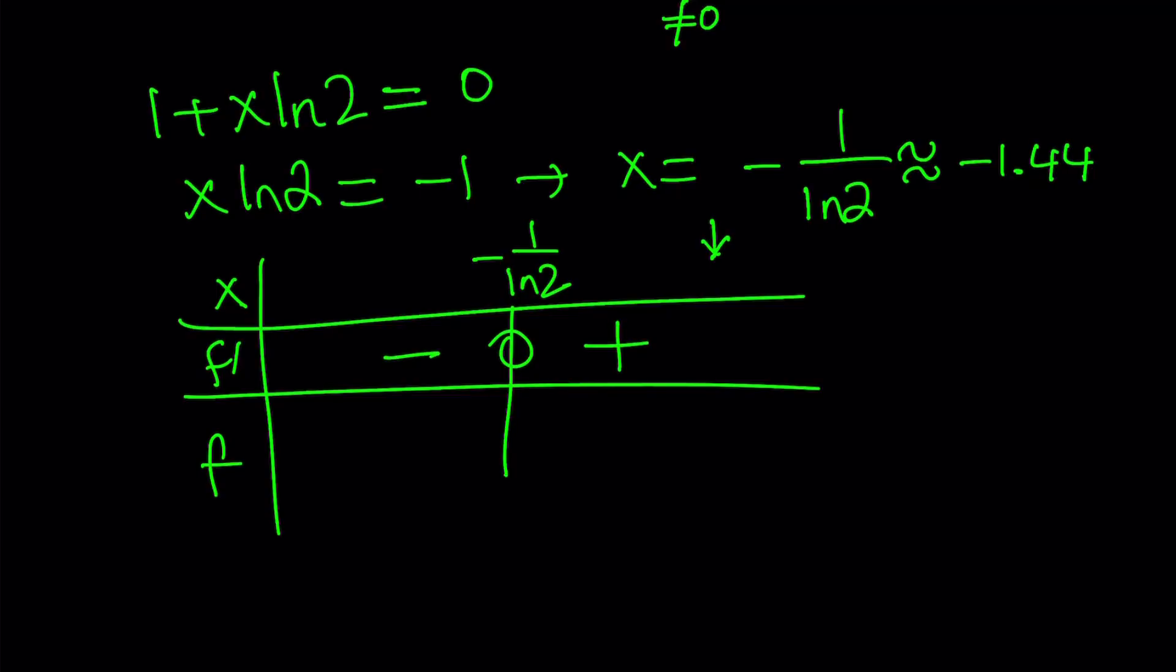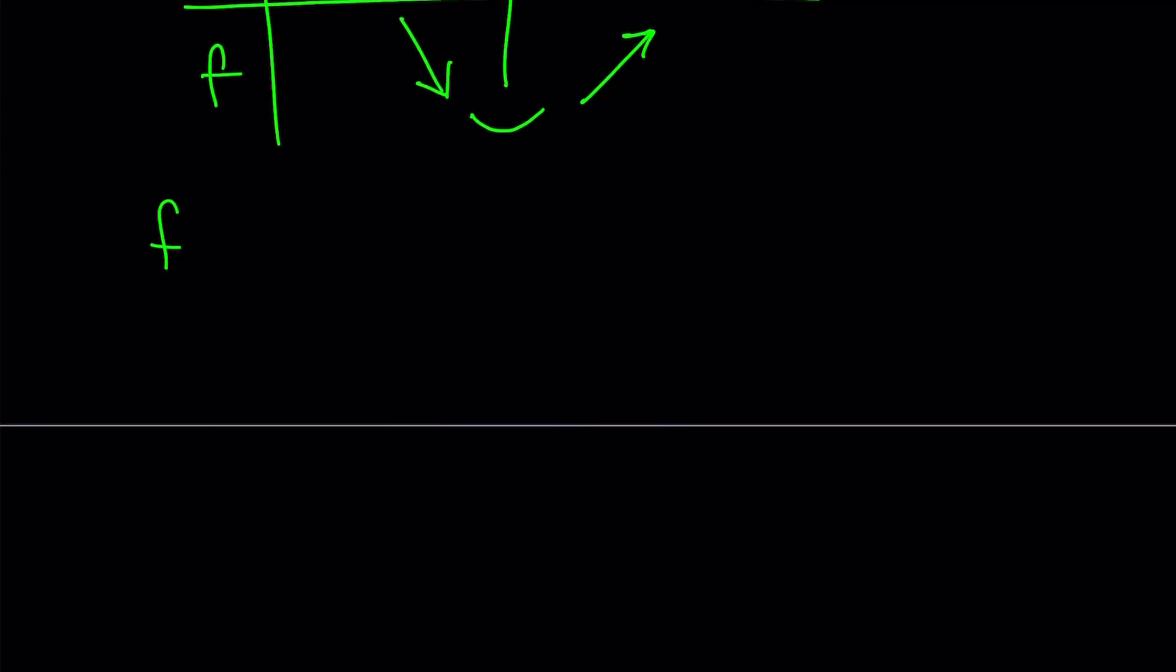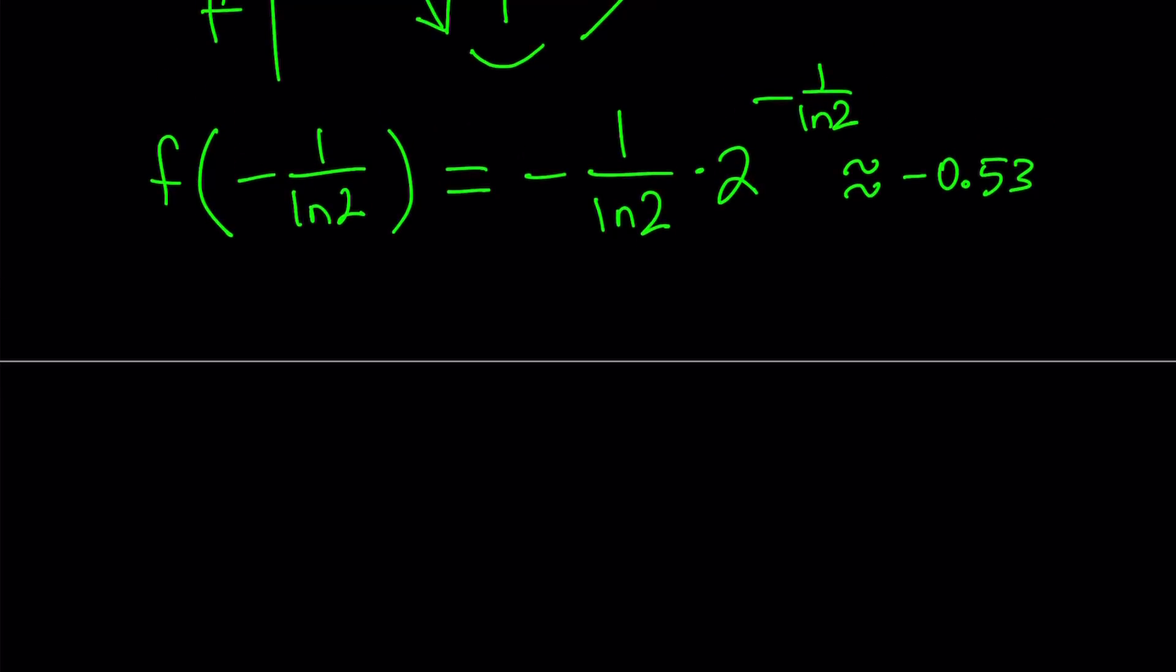Here it's negative, which indicates that our function is going to be decreasing and then increasing. So it's going to have a minimum point at x = -1/ln(2). Now, what is the y value for that point? We can evaluate that very easily by replacing x with -1/ln(2) in f(x). That gives us (-1/ln(2))·2^(-1/ln(2)). And again, I did the work for you. This is about -0.53. It's like almost -1/2, maybe a little larger.